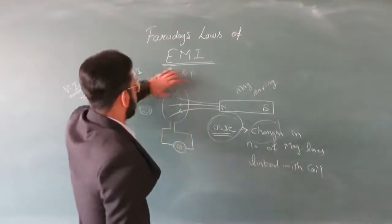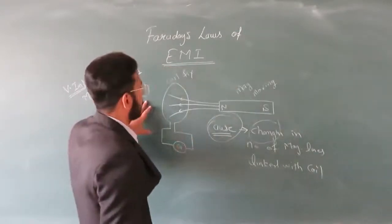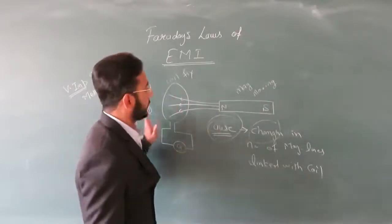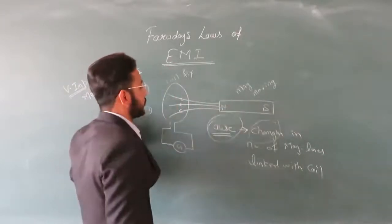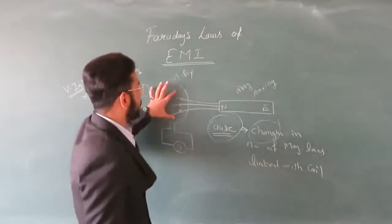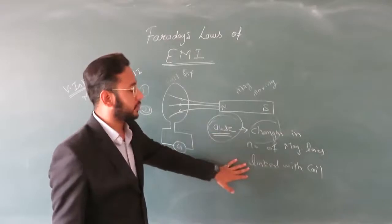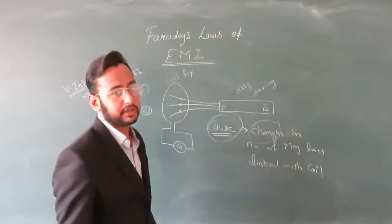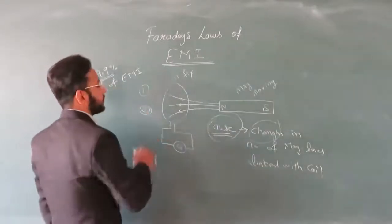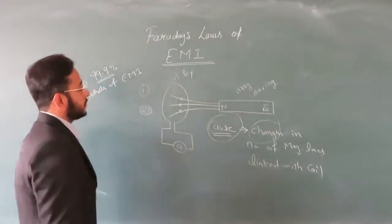The first method is to fix the coil and move the magnet. The second method is to fix the magnet and move the coil. The same principle applies — it is the relative motion that causes the change.